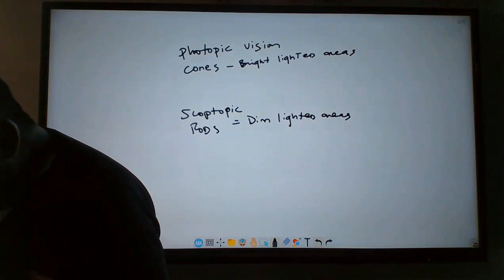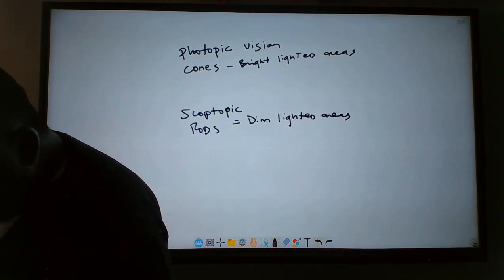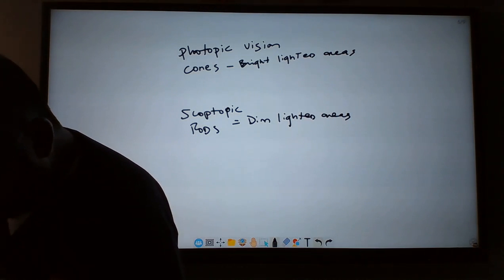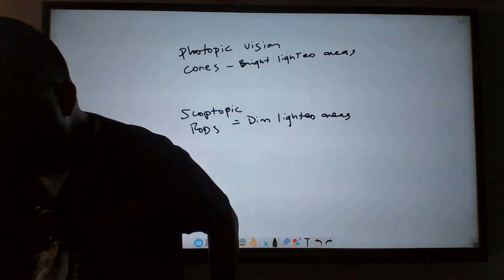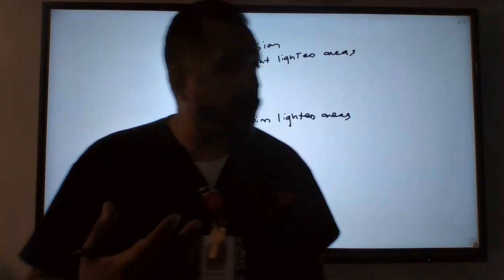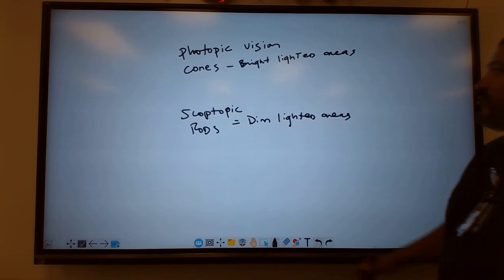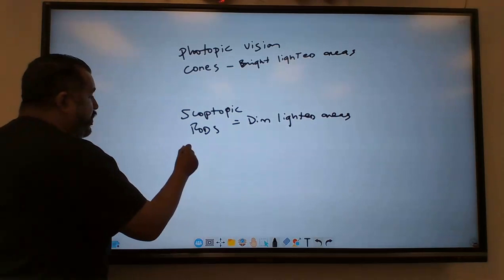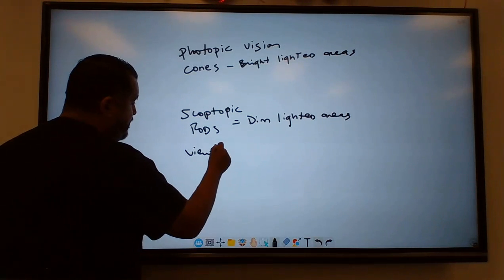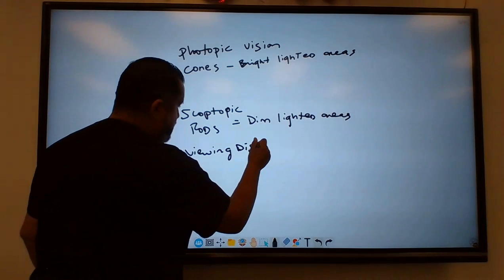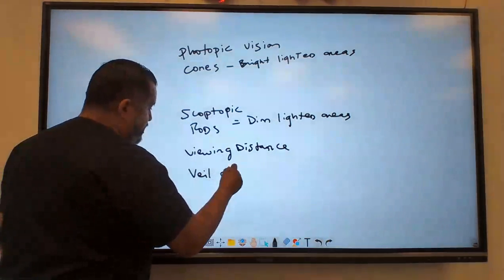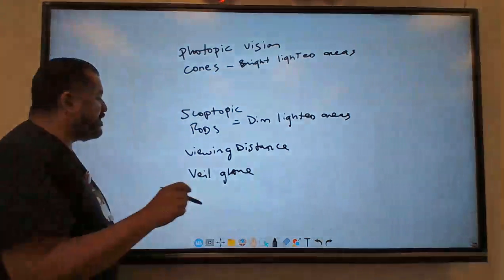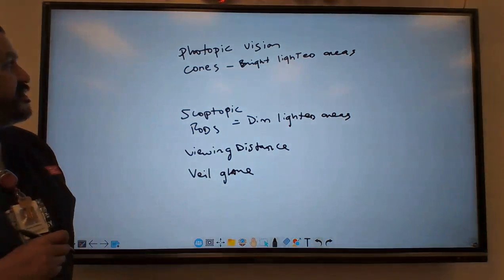So there's not much more here in regards to the key terms I have to go over. I would suggest that you read all of the terms. But this is a very short chapter. I wanted to hit on the key terms. So we went over photopic visions, photopic vision. We went over viewing distance. We talked about veil glare and a little bit of the boundary effect.